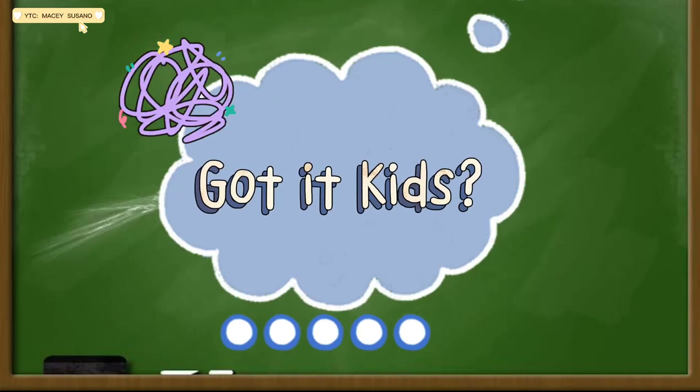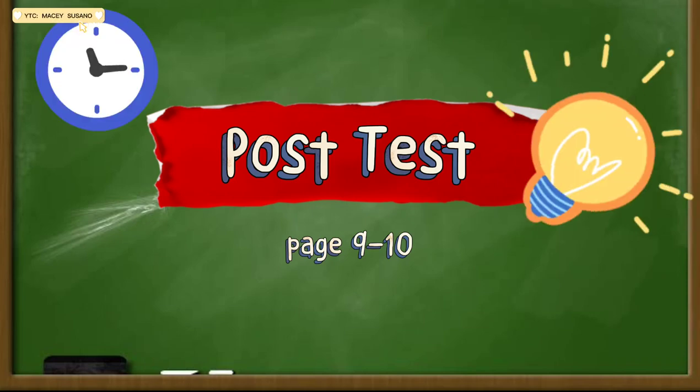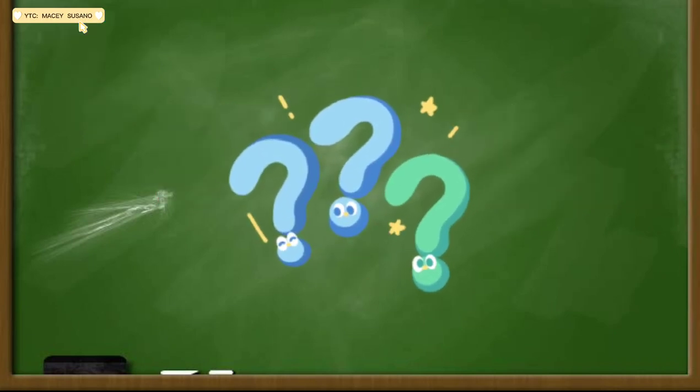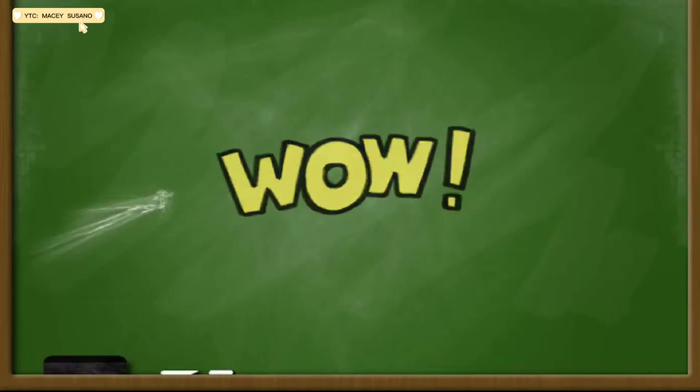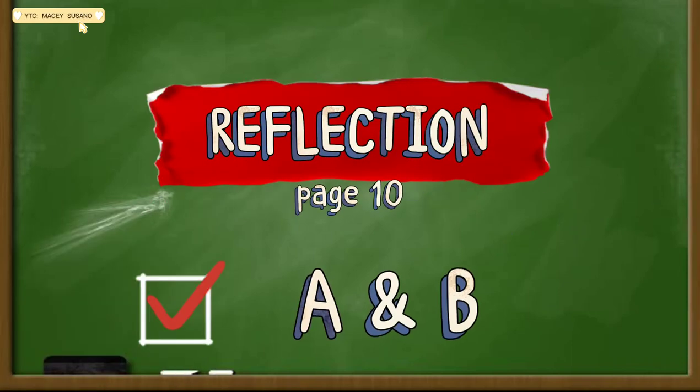Got it, kids! You are now ready to answer your post-test. Start answering now! Are you done, kids? Did you get a perfect score? That's great! Now, make a reflection by answering letters A and B on your notebook.